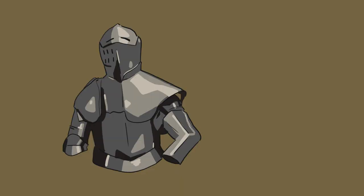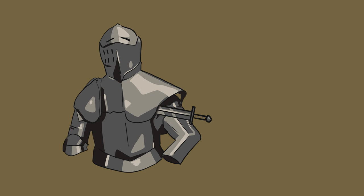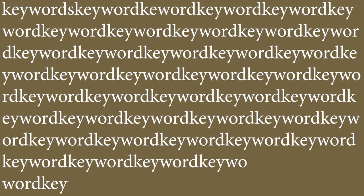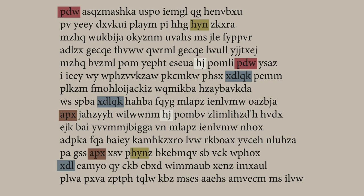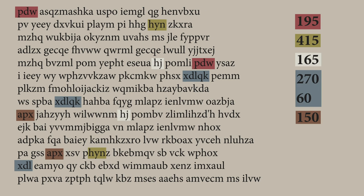Babbage knew that the chink in the Vigenère cipher's armor was the use of a keyword. If he could figure out the keyword, he could break the encryption. What he eventually realized was that the nature of how the keyword was used — specifically the fact that it was repeated — was the answer to solving the cipher. He could use this knowledge to first figure out the length of the keyword. Babbage looked for repeated sequences of letters in a cipher. A repeated sequence of letters would indicate that it was the same word, or fraction of a word, encrypted the same way multiple times. Next, Babbage would count the characters between the repeated sequences, then note the numbers down and figure out the common factor between them. In this example, the common factor is five, meaning the length of the keyword is five letters.